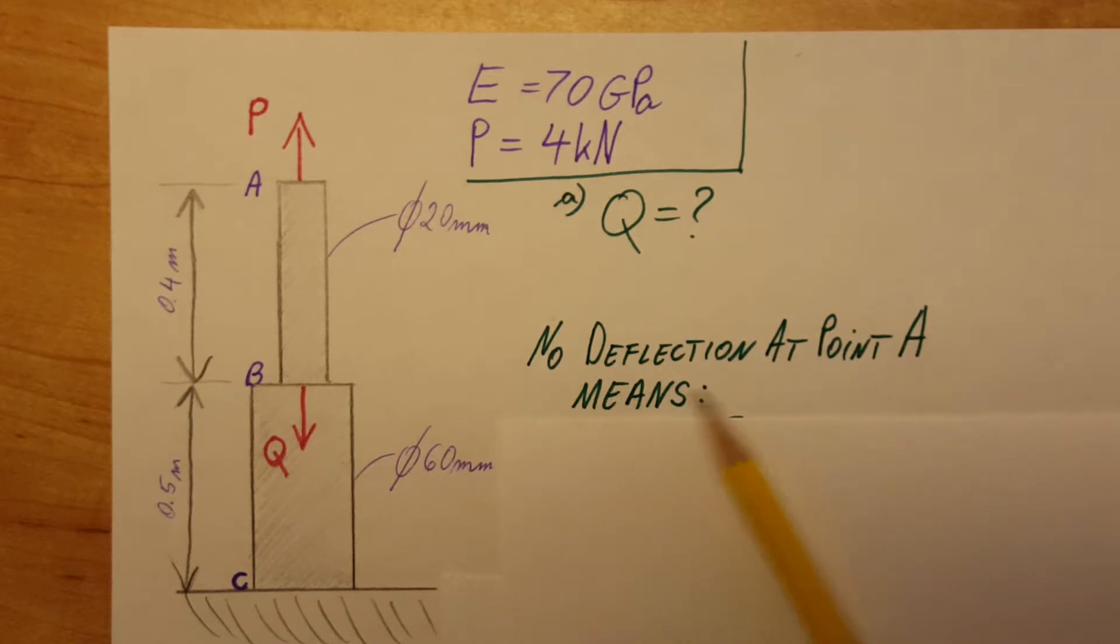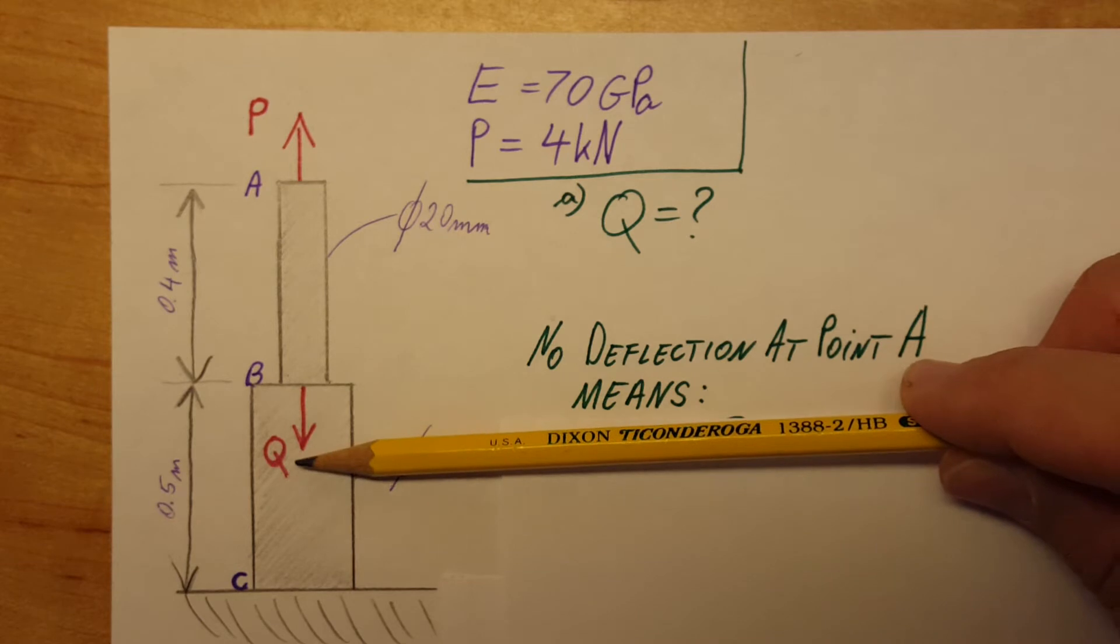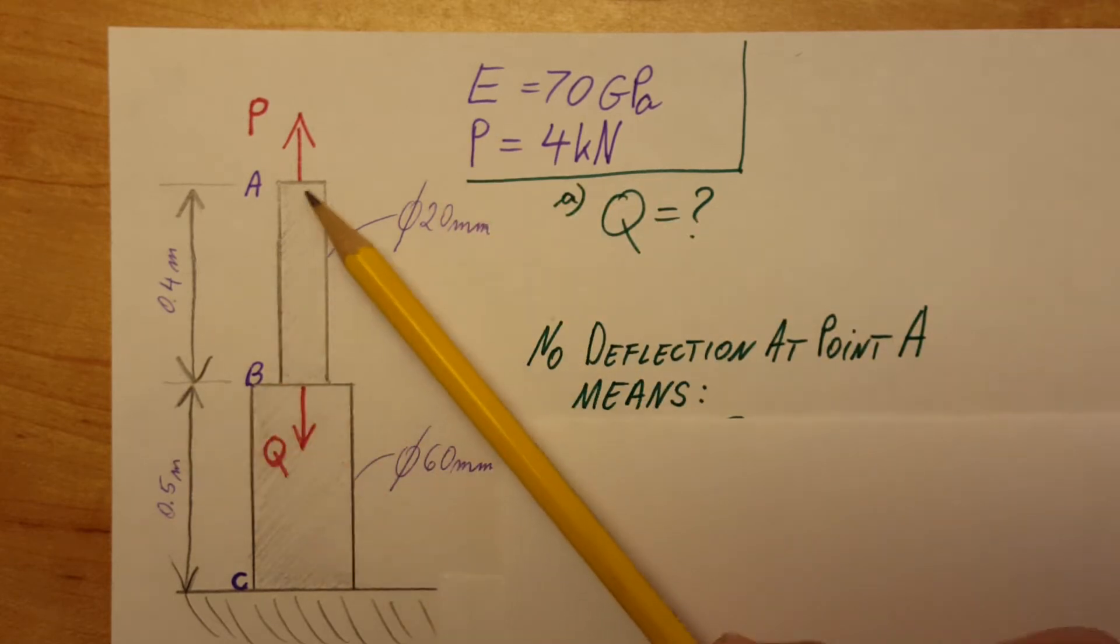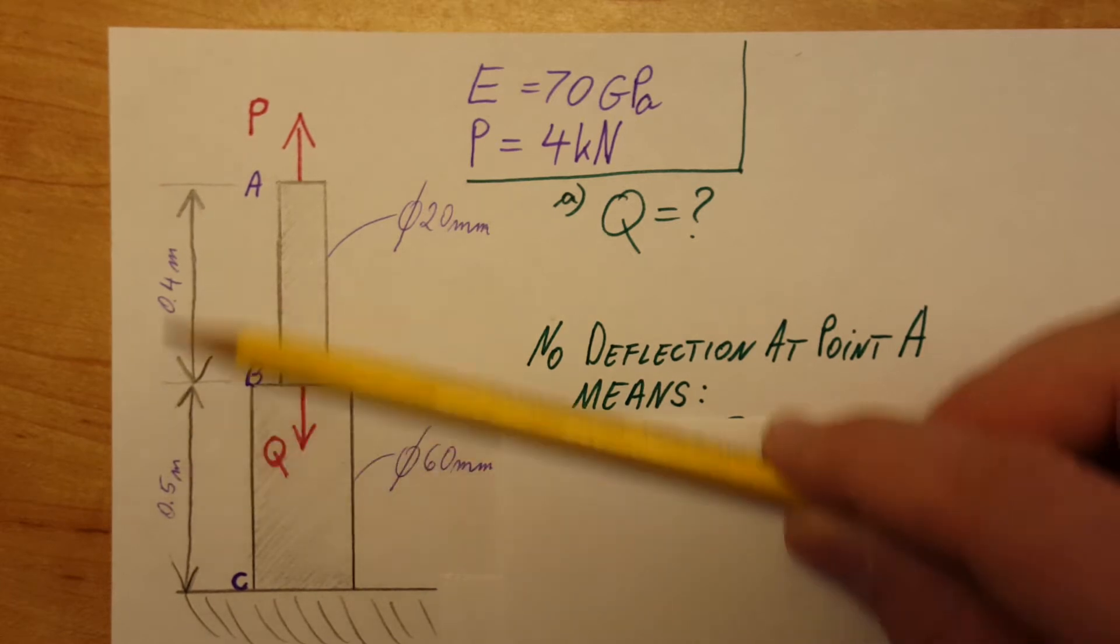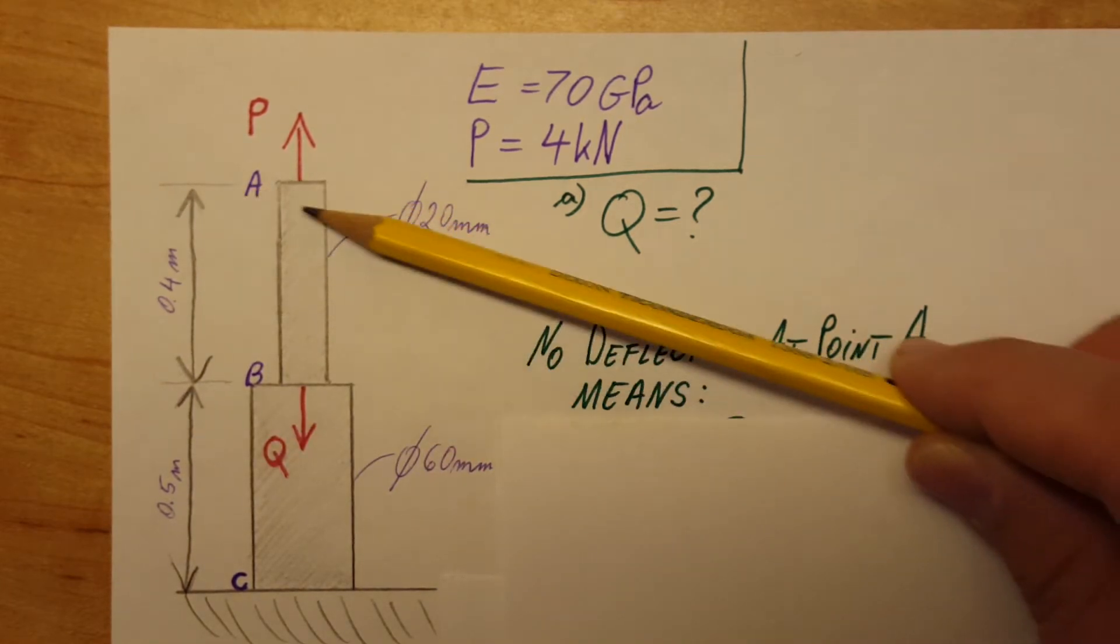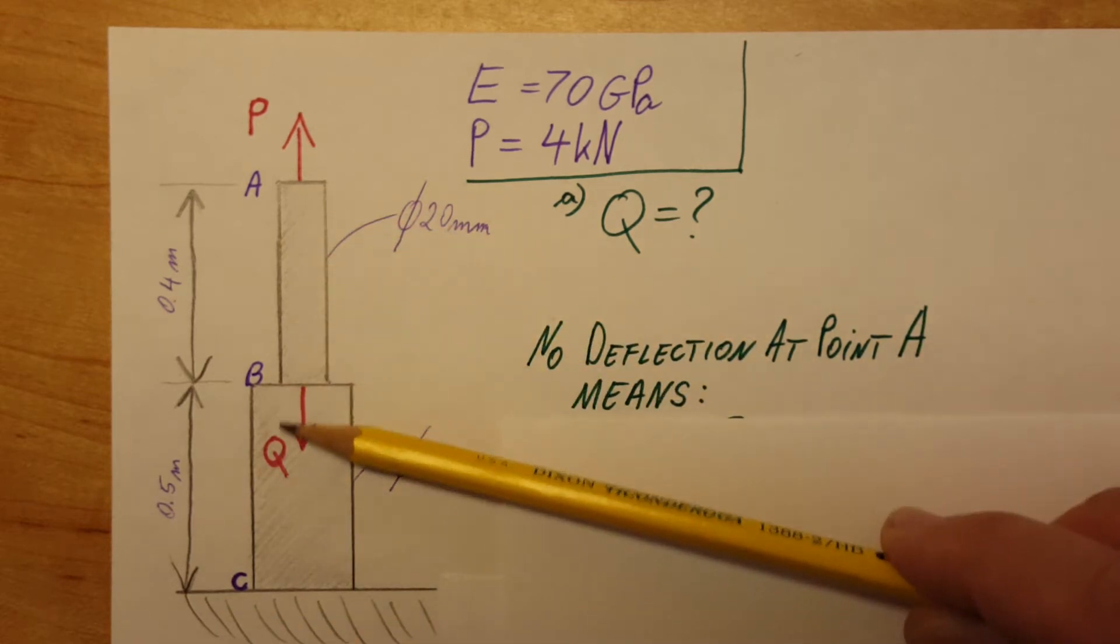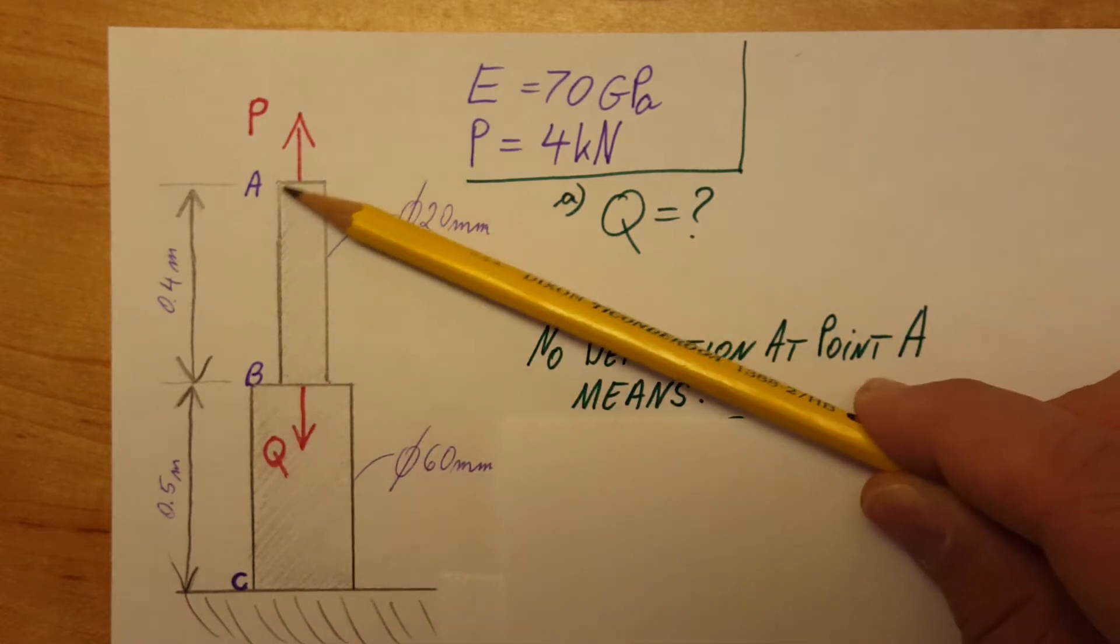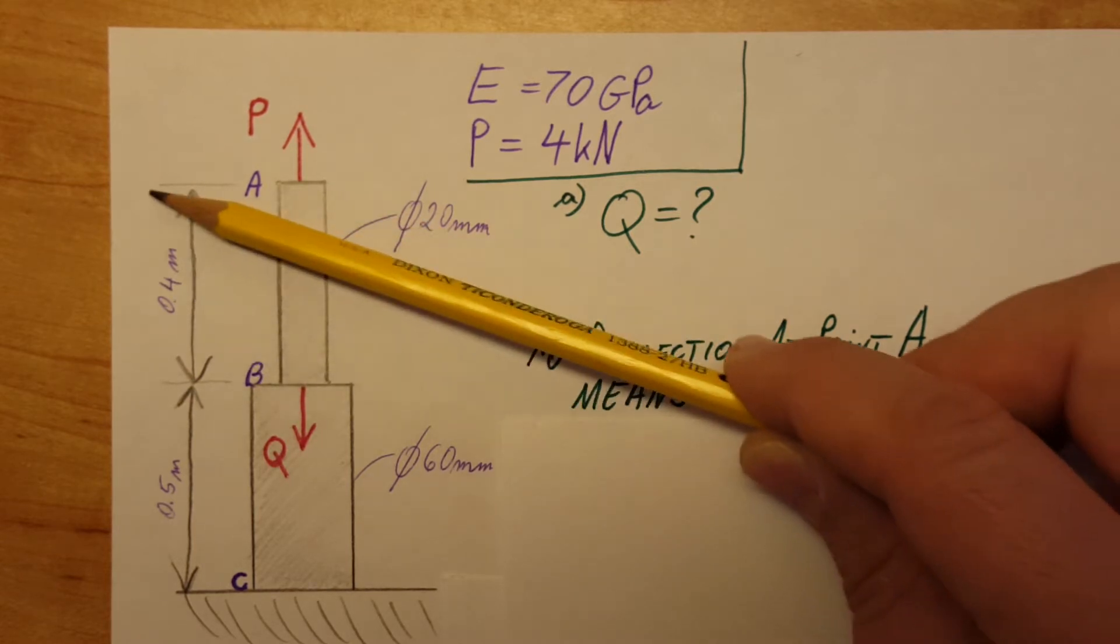No deflection at point A means that whatever these two loads are doing to this rod, it will not change its height, which is 0.5 plus 0.4, so together 0.9 meters. Point A will stay in the same location at 0.9 meters high.